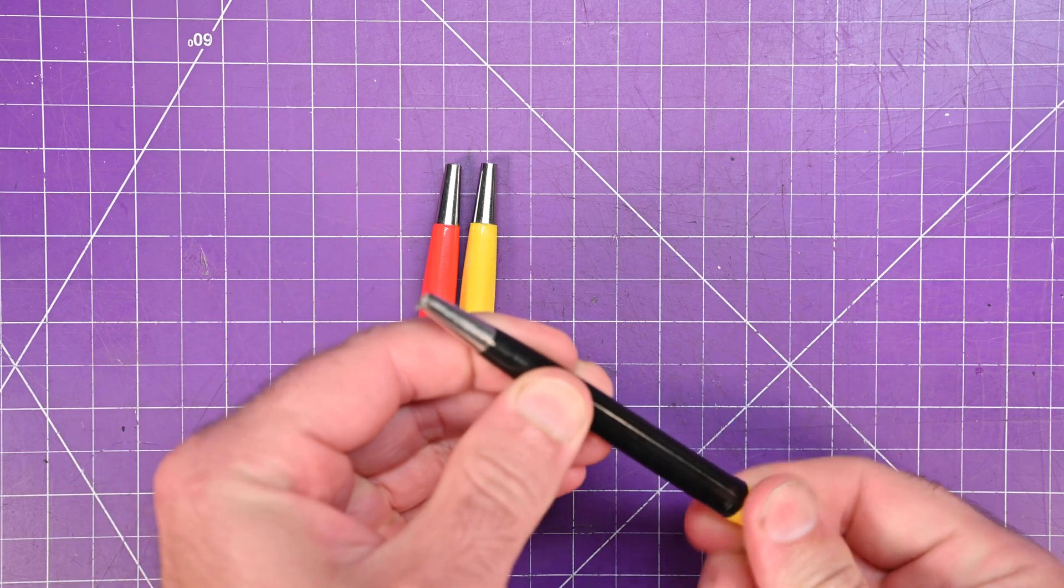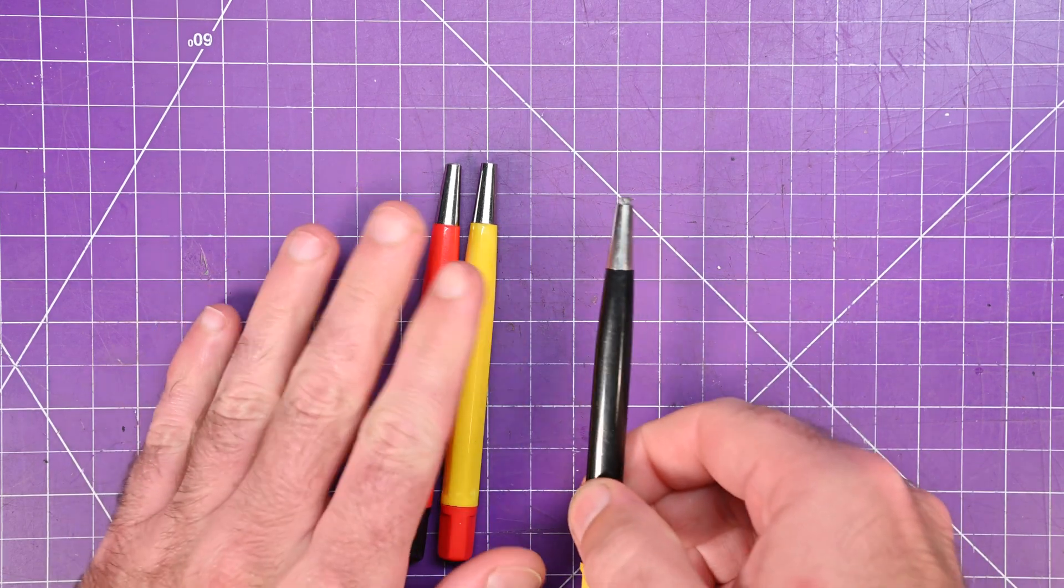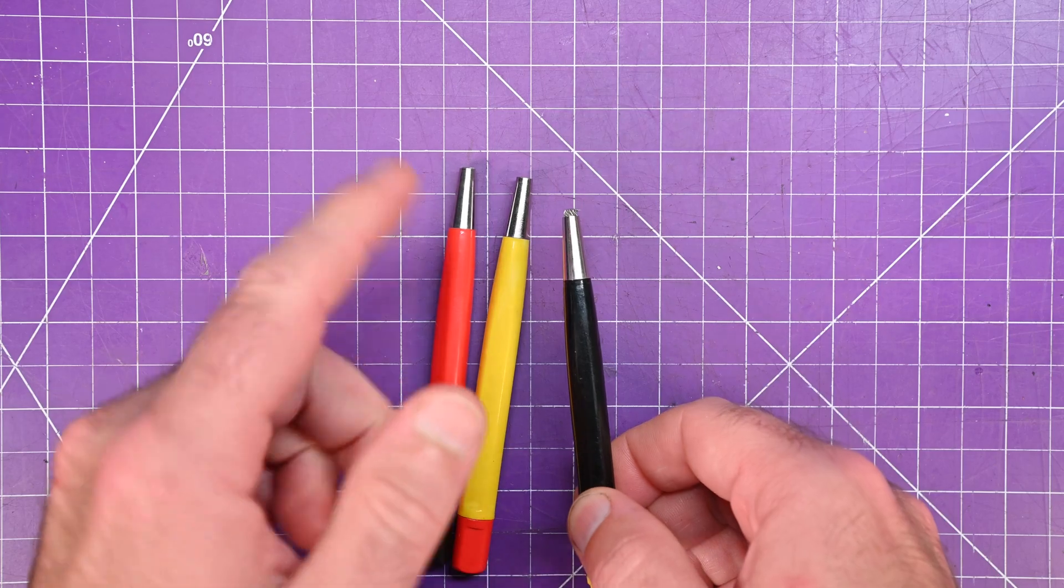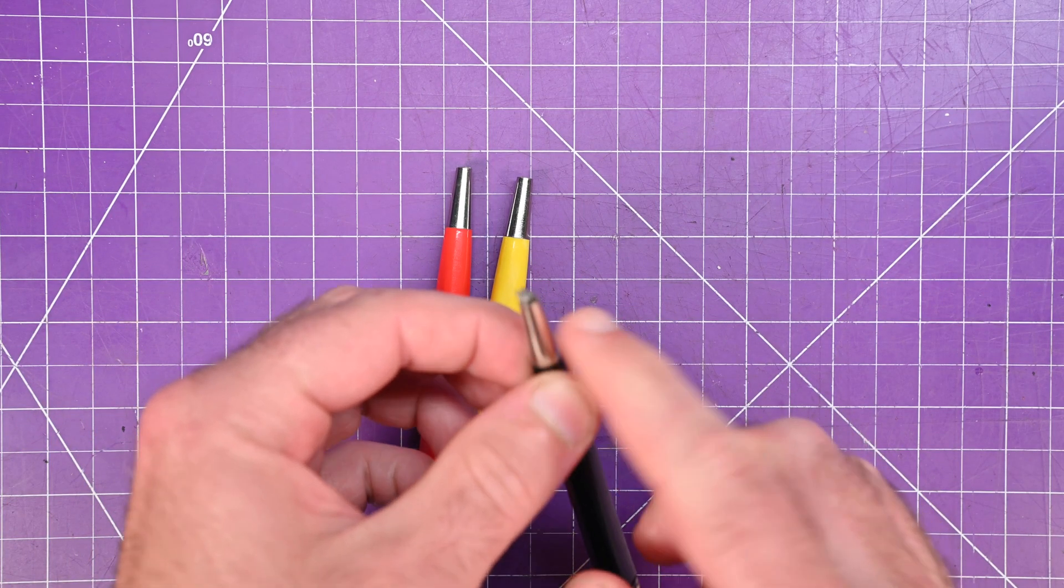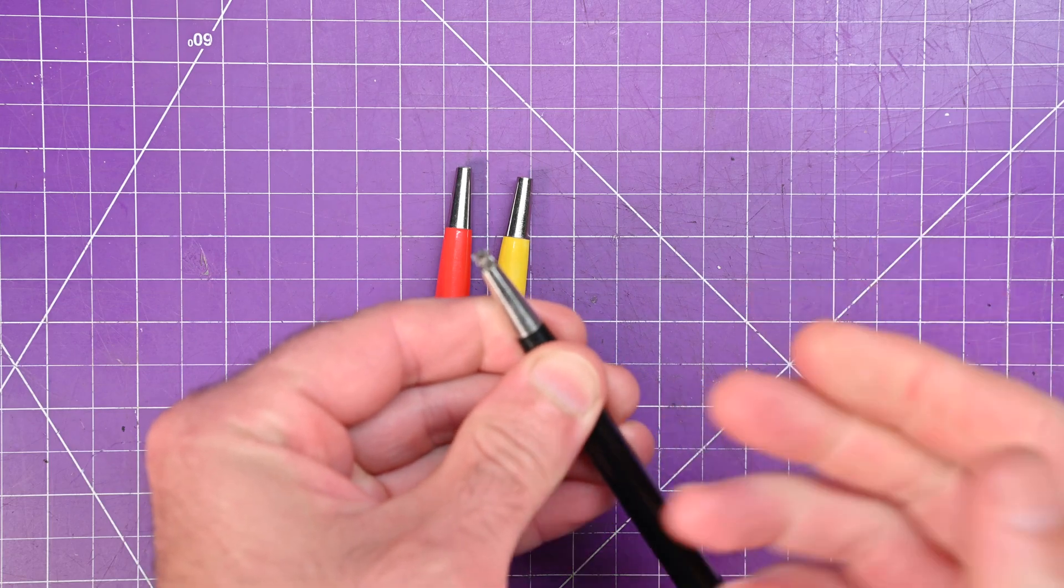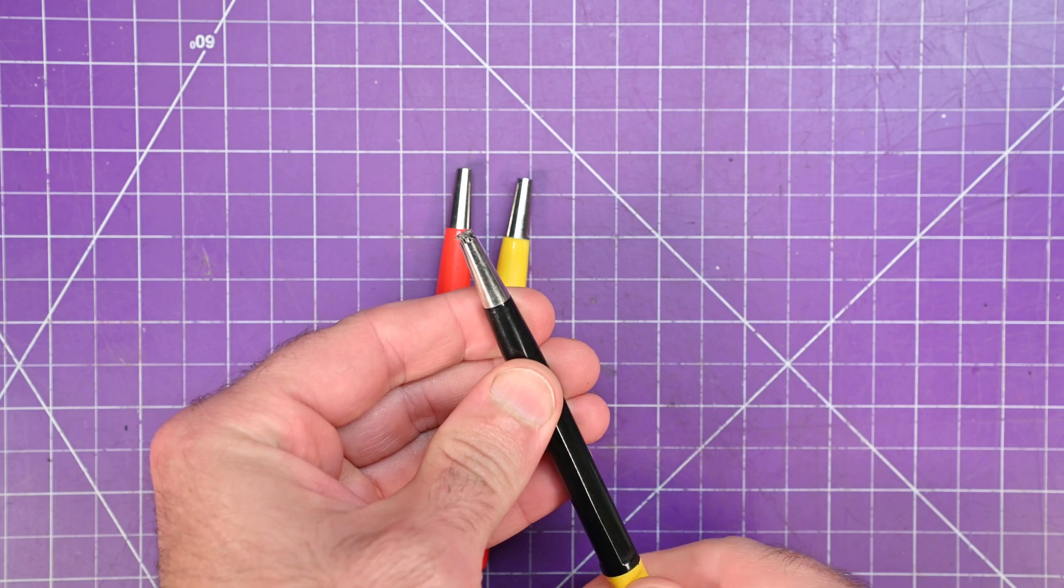You just twist this little back piece and the grit comes out more or less. This particular set has three different types of grittiness. This is a steel brush, and the more you stick it out, the softer it is. The closer you keep it to the cap, the stiffer it is.